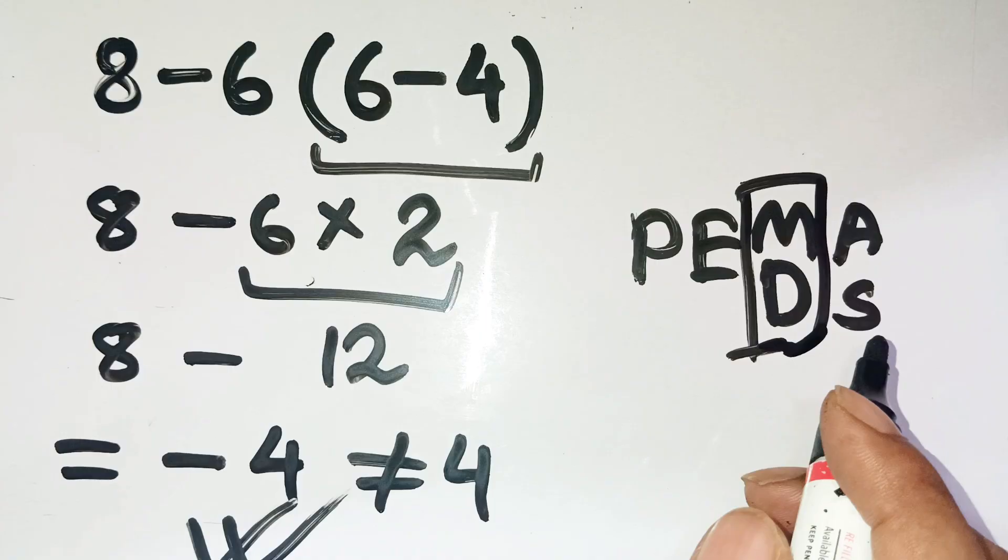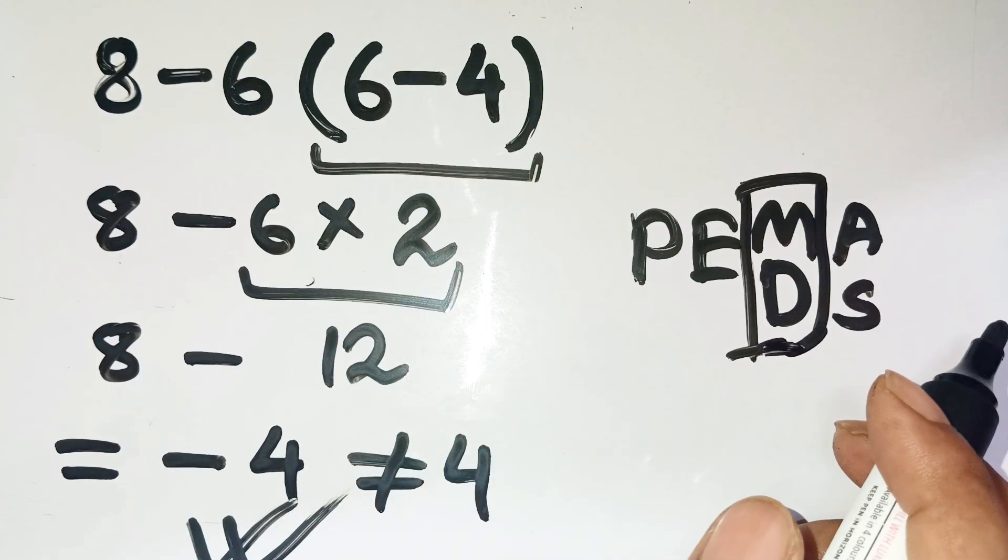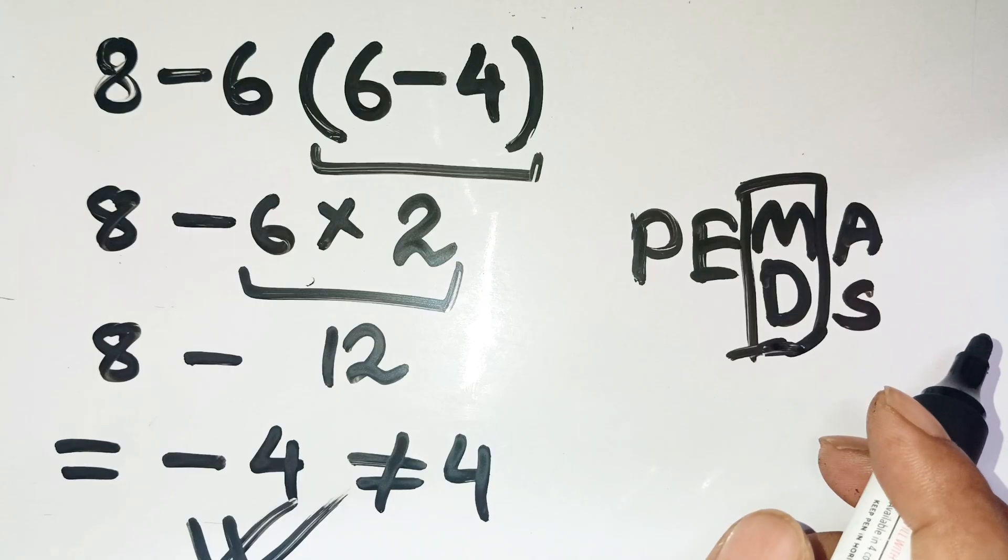Imagine if you were calculating something in real life like money owed or change left and you flip the order. You'd be off by the entire direction of the number.